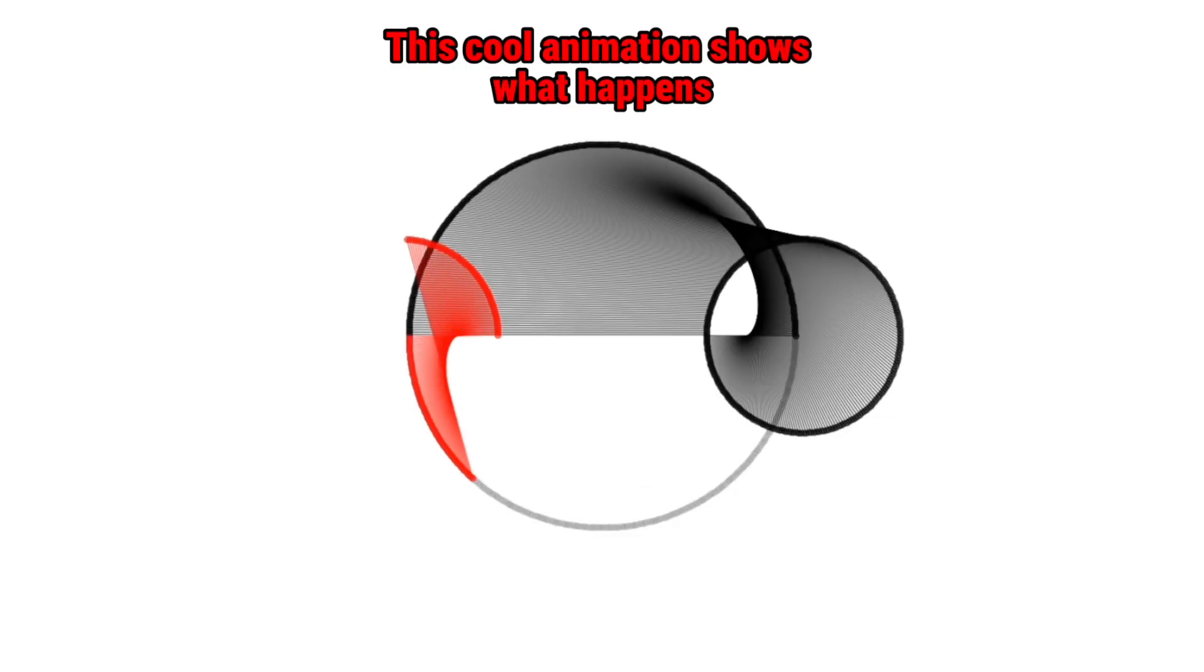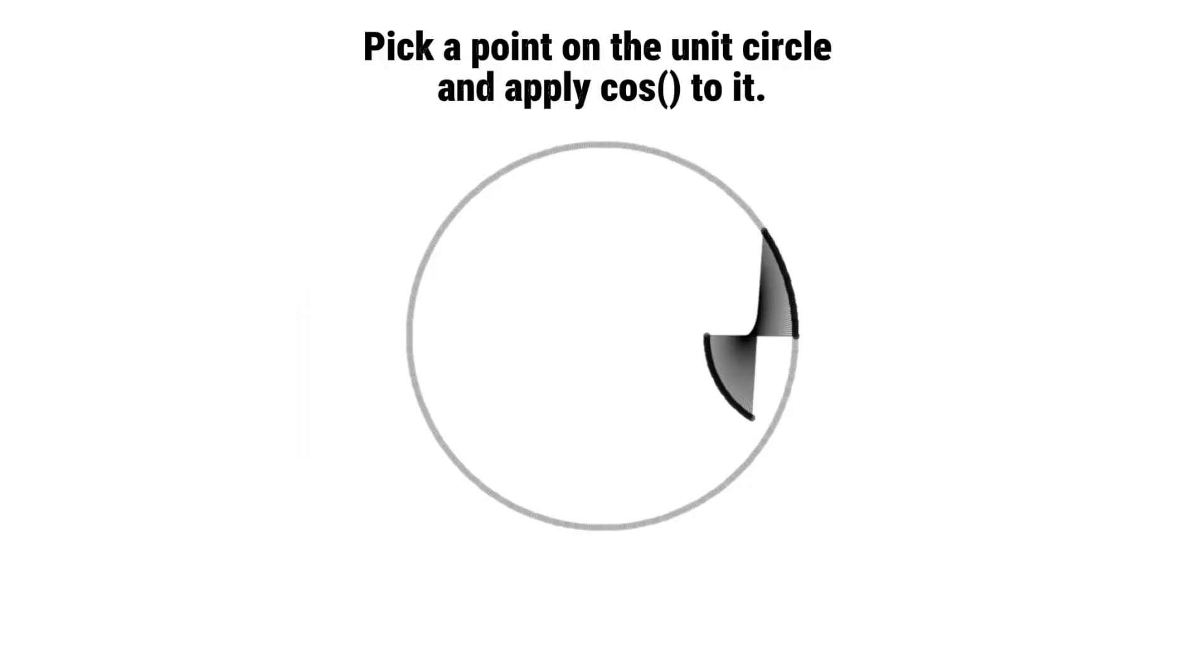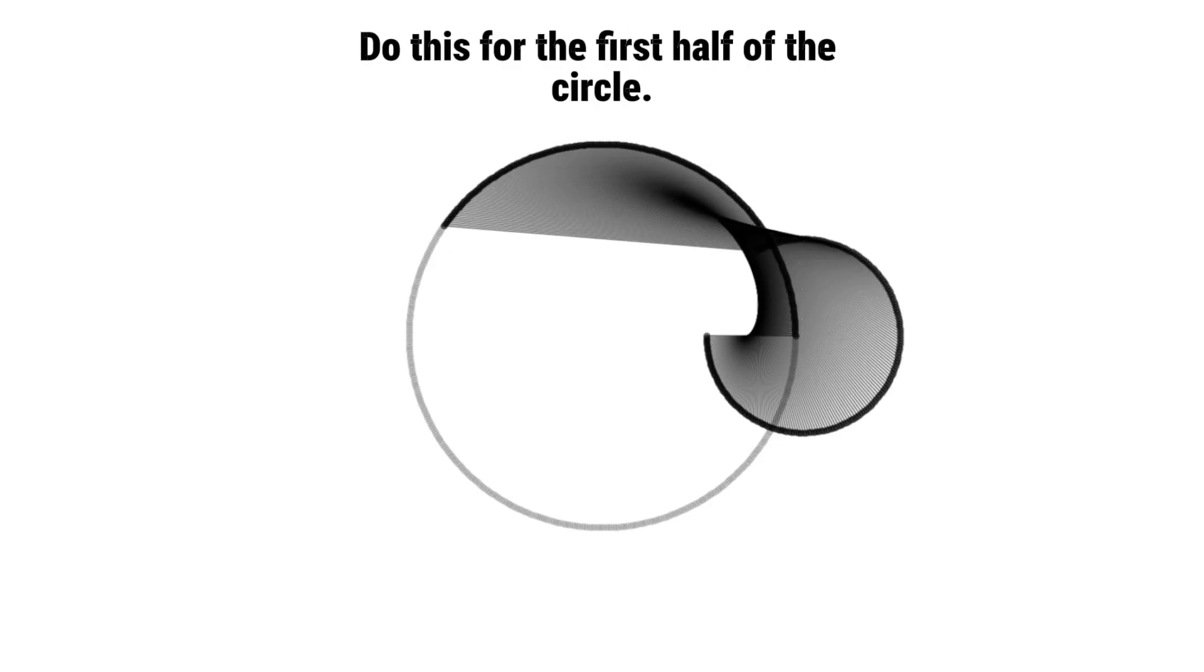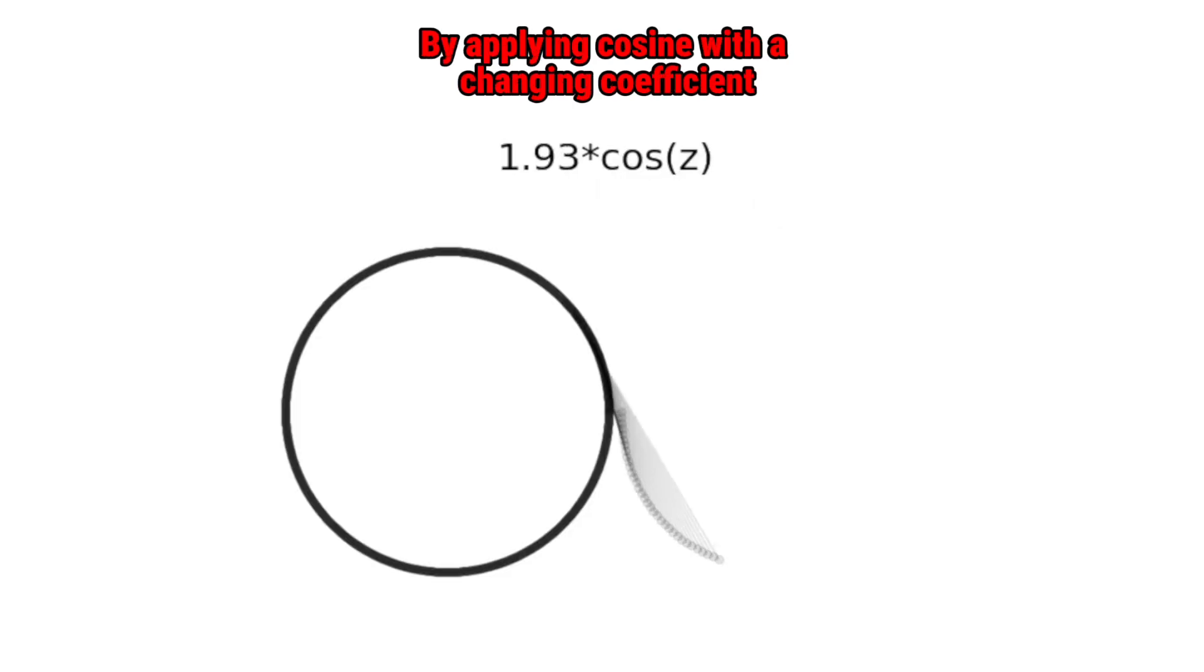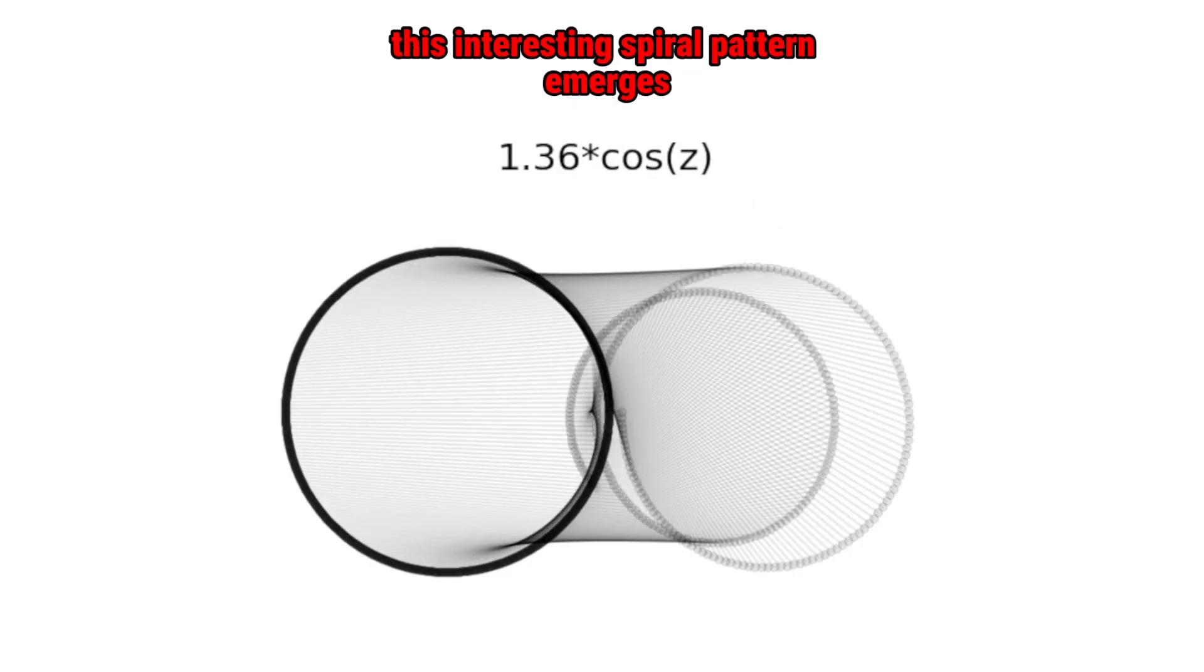This cool animation shows what happens when you apply negative one times the cosine function to the unit circle. Pick a point on the unit circle and apply cosine to it. Draw a line connecting the two points. Do this for the first half of the circle. For the second half, by applying cosine with a changing coefficient, this interesting spiral pattern emerges.